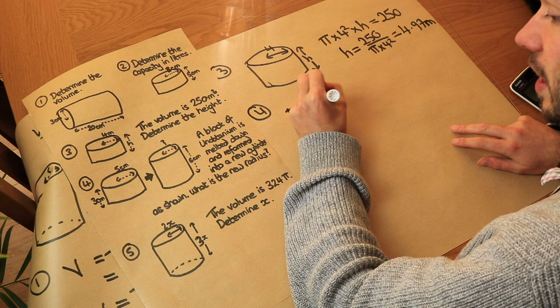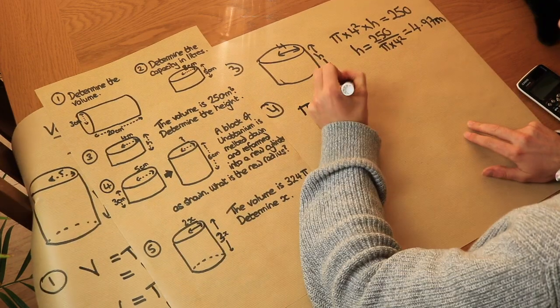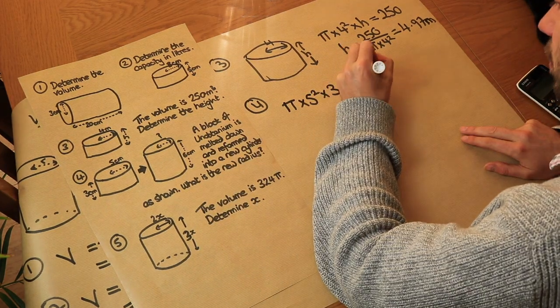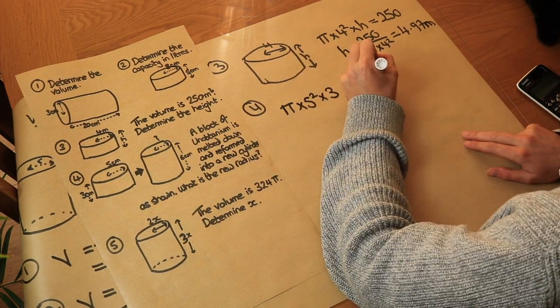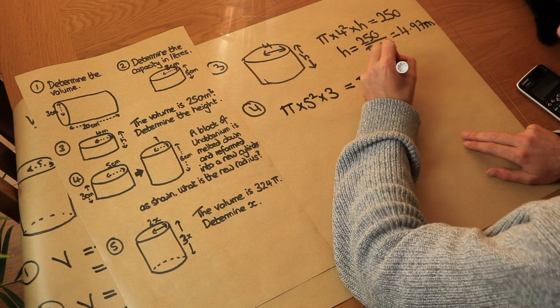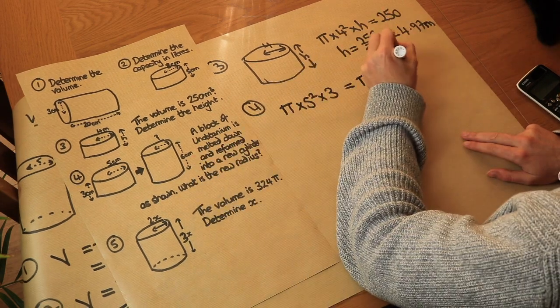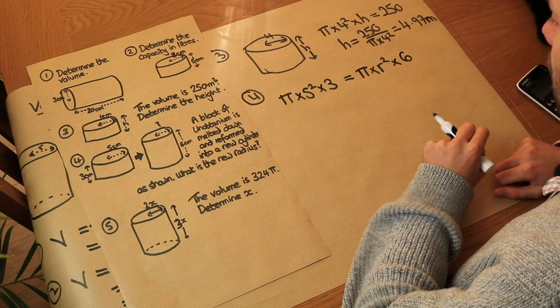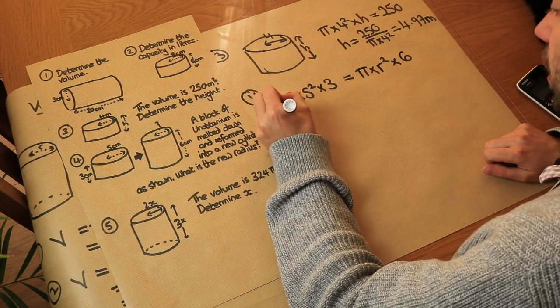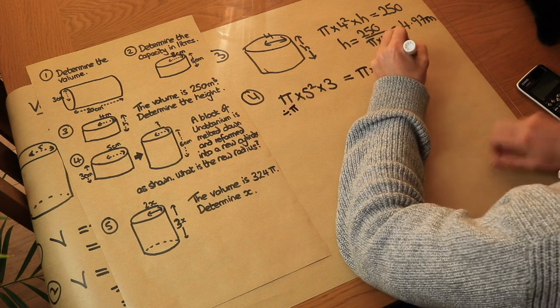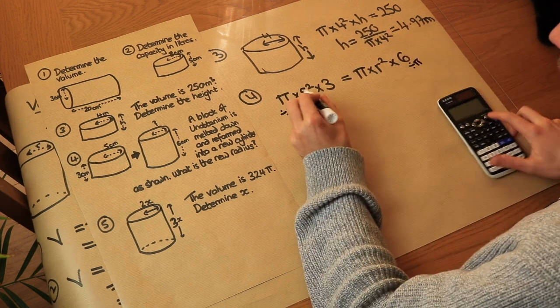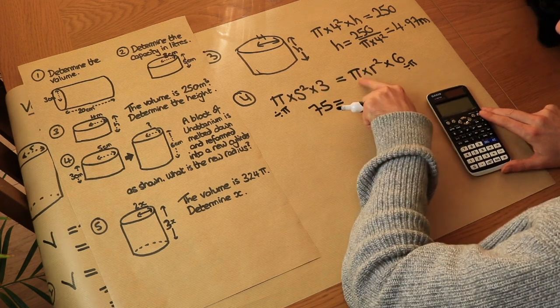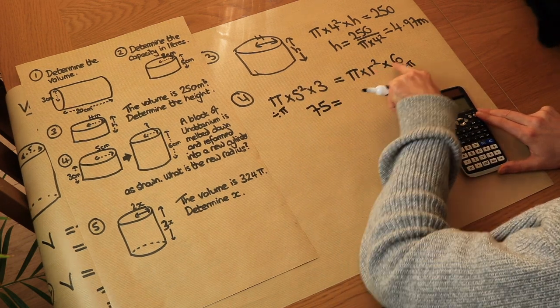So let's find the volume before. The volume is going to be pi times the radius squared, so 5 squared times by the height which is 3. And that is equal to the new volume which is pi times the radius squared. We don't know the radius so let's just use r, r squared times by the height which is 6, and we just need to solve to find r squared. Now I note that we could divide both sides of the equation by pi. So we do that, we've got 5 squared times 3 left which is 75, and that is equal to, where the pi is gone because we divided by pi, we've got 6 r squared.